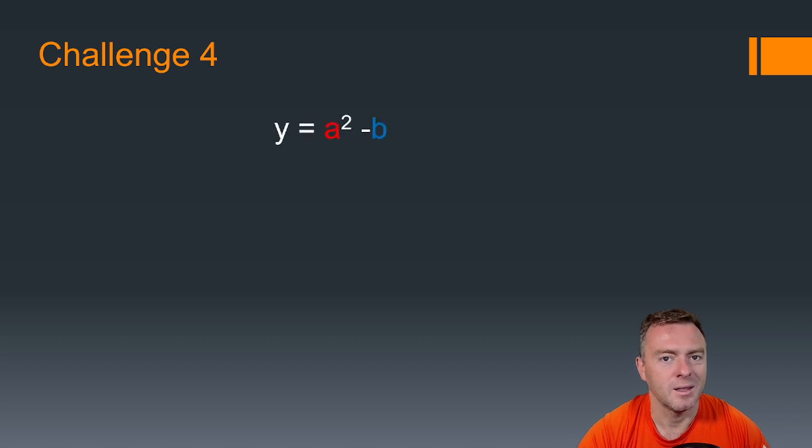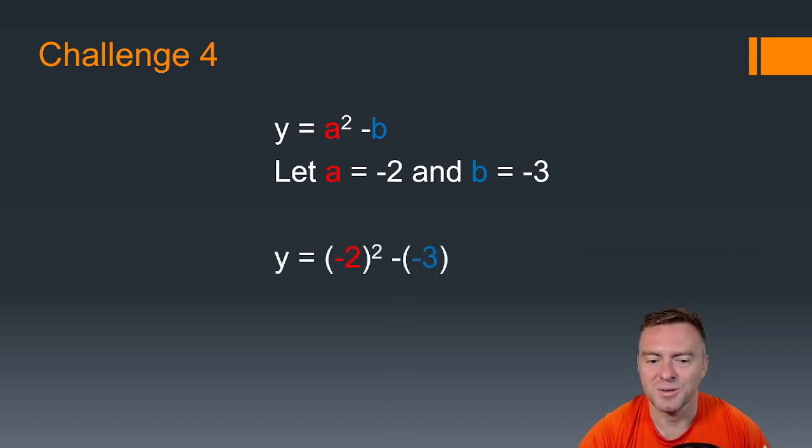The next one here, you've got a² - b. We've got a = -2, b = -3. So just pause the video, see how you go. And you should have got -2² minus minus 3. So that's the same as 4 + 3, which then gives you 7.